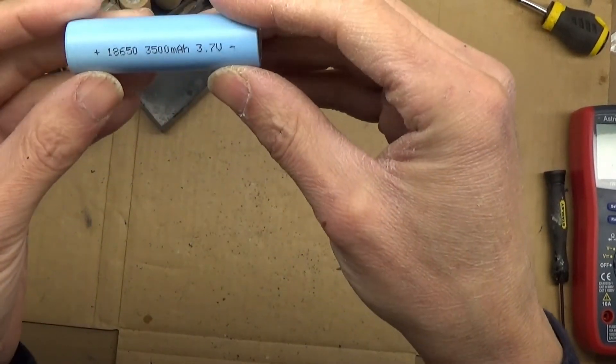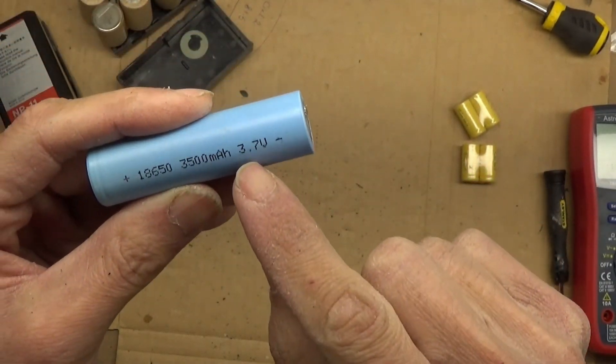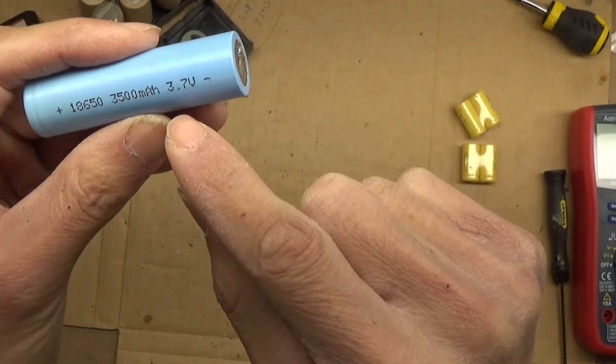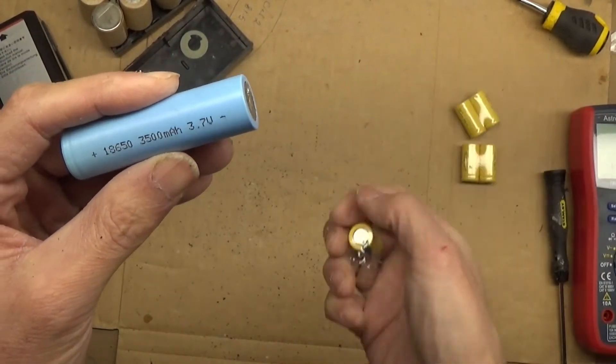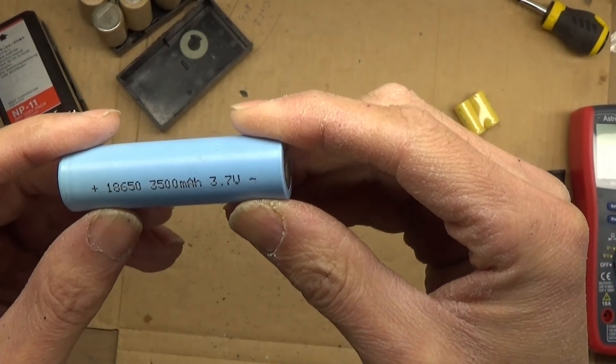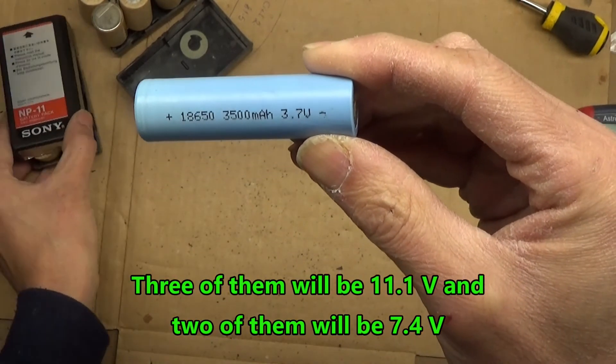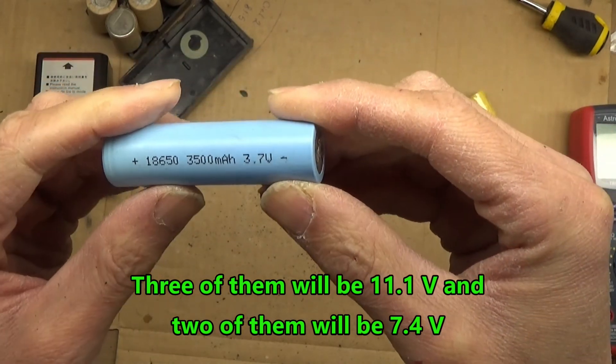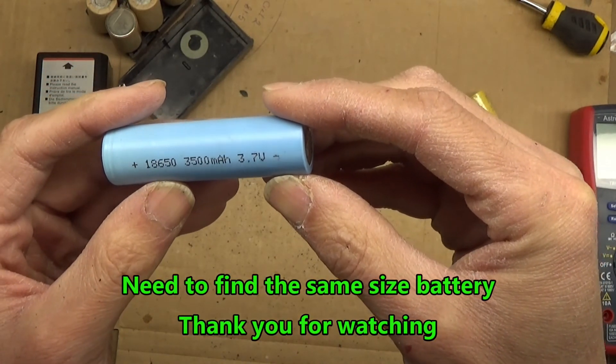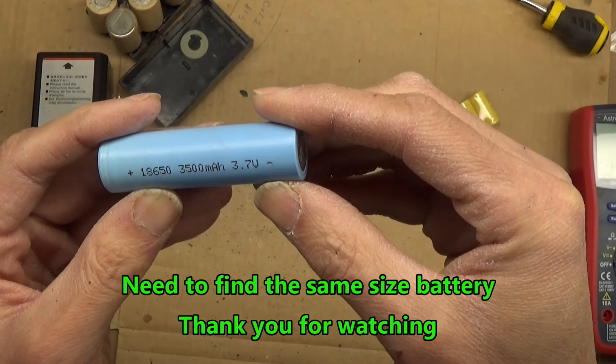I have this kind of battery that, unfortunately this is a 3.7. This has a good capacity, 3,500 mAh, but 3.7 volt. If I get 3 of them, it will be more than 9.6 volt. If I get 2 of them, it will be less than that. 7.4.